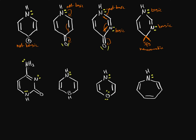On this next structure we have two nitrogens each with lone pairs. The ring right now has four pi electrons. We want six to make it aromatic, so we move this lone pair in, shift the pi bonds around, and end up with six pi electrons — so this nitrogen's lone pair is not basic because it makes the ring aromatic. The other nitrogen's lone pair can be resonance stabilized, but doing so won't make the ring aromatic, so it is basic. Moving further, the next structure also has four pi electrons — moving the lone pair in and shifting the pi bond gives six pi electrons and aromaticity, so that nitrogen is not basic.